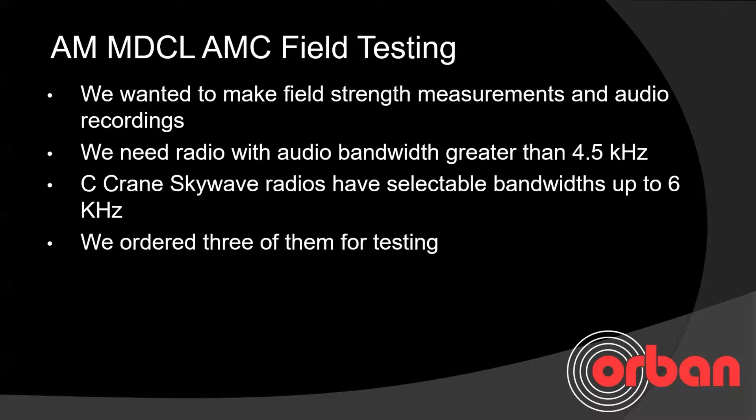We wanted to make field strength measurements and audio recordings out in the field. To do that we needed to find a radio receiver with an audio bandwidth greater than four and a half kilohertz. Over the last 25 or 30 years the AM band has become very noisy, so receivers in cars typically have a three and a half kilohertz bandwidth. We needed something wider to really judge the impact of running MDCL levels upwards of 6 dB of carrier suppression — at least a six kilohertz bandwidth.